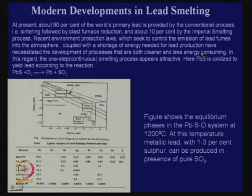One way to be less energy consuming would be to combine the roasting, sintering, and reduction steps into one reactor — like copper production — to have continuous production of lead in a reactor. We will save energy and it will be higher technology. Such a one-step continuous smelting process appears attractive. The principle would be to directly go from lead sulphide to lead, not through an intermediate oxide, sulphate, etc.